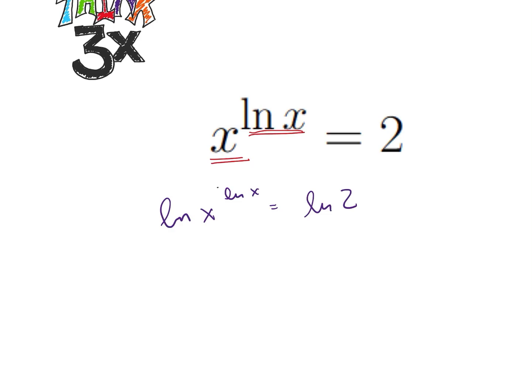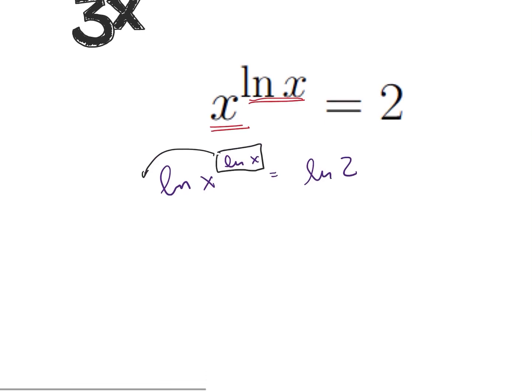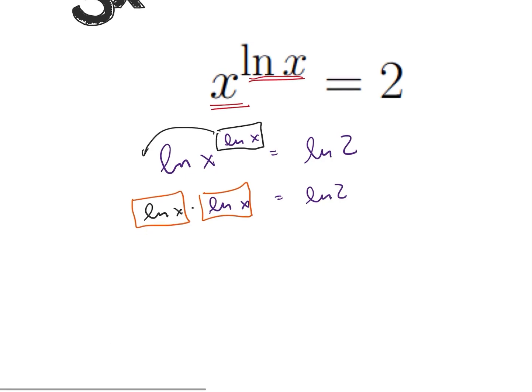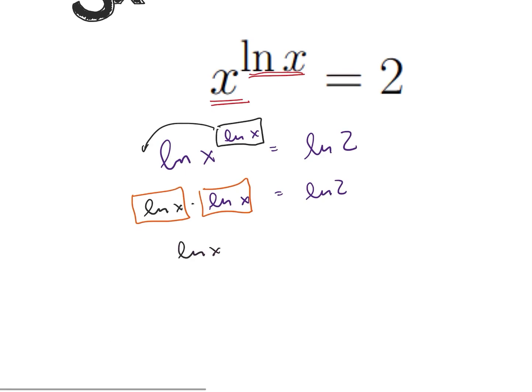When we do that we can now pull this exponent out to the front and we're going to get ln of x times ln of x is equal to ln of 2. So clearly we can see there's something nice that happens there. And what we're going to end up with is the natural log of x squared is equal to the natural log of 2.